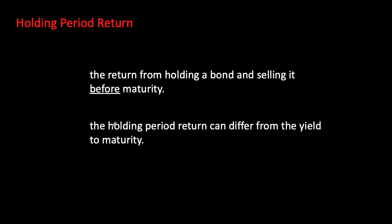Welcome back. We're going to continue with our topic of asset pricing and interest rates, focusing on calculating the return for holding a bond. Holding period return is the return for holding a bond when you sell it before its maturity date. This return can be distinctively different from your yield to maturity, which is calculated when you know the purchase price, face value, and time to maturity given some coupon payments — it is the internal rate of return for holding the bond until maturity.